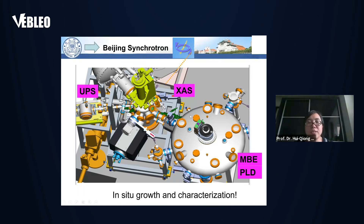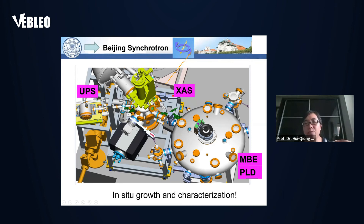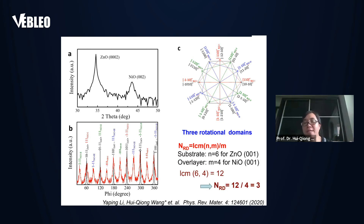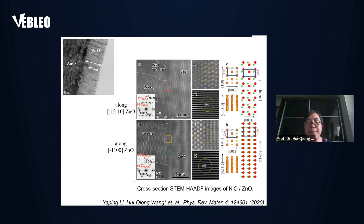This experiment was done at the Beijing Synchrotron Radiation Facility, where a nice MBE chamber is attached to the synchrotron facility. This allows us to characterize the evolution of the electronic properties as we increase the film thickness. We confirmed that we grow cubic nickel oxide on top of hexagonal zinc oxide, and we observed three rotational domains — which matches the calculation from the theoretical formula in the PRL paper. We also used scanning transmission electron microscopy to investigate the interface and observed several different domains.